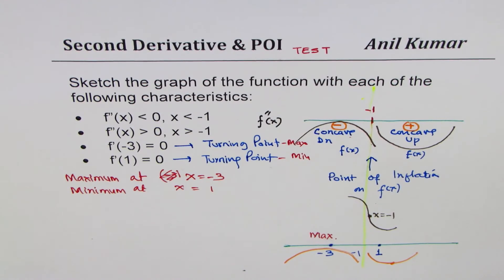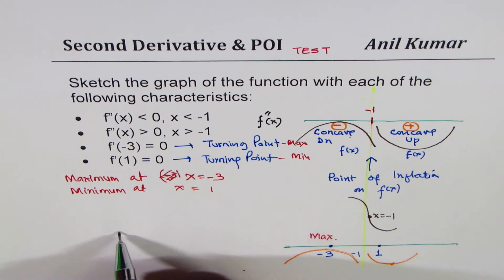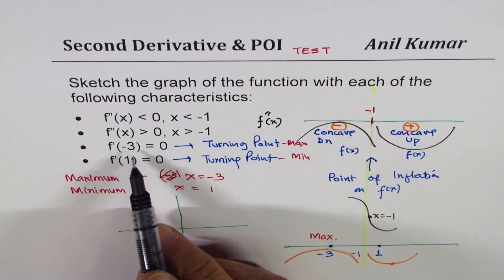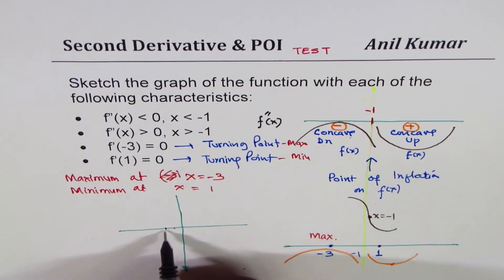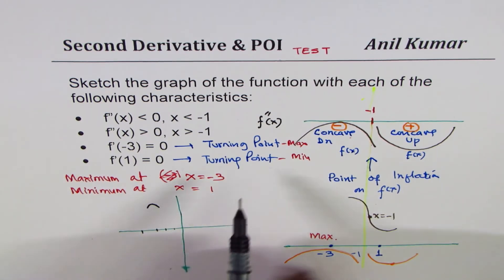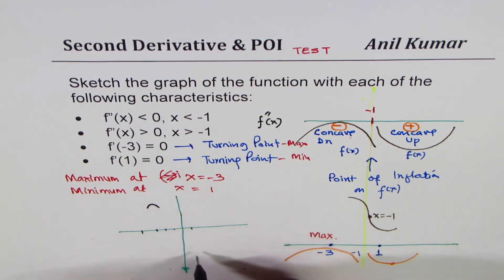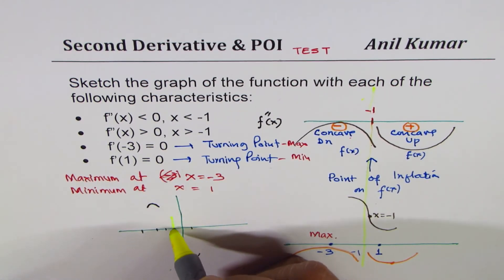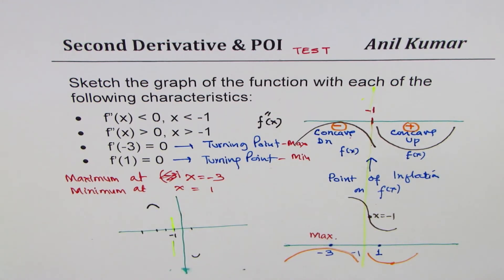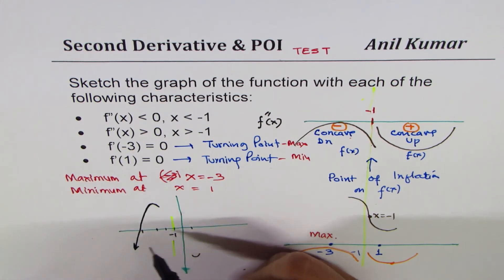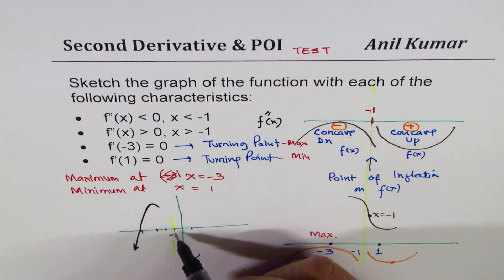By analyzing the first and second derivatives together we can confirm the shape. Now let's sketch it: at x = -3 we have a maximum, so the turning point curves like this. At x = 1 we have a minimum, so the curve turns upward there. The graph is concave down up to x = -1, so it curves downward in that section.